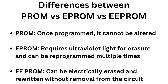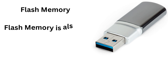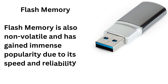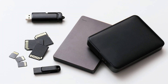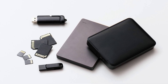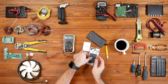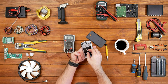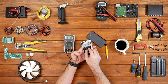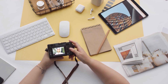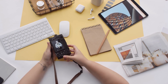Now let's talk about flash memory. This type of memory is also non-volatile and has gained immense popularity due to its speed and reliability. It's commonly used in USB drives, SSDs (solid-state drives), and memory cards. Flash memory allows for faster data access compared to traditional hard drives and is more durable since it has no moving parts. It's essential for portable devices and is often used in smartphones and tablets. Flash memory can endure about 10,000 write cycles, making it a robust option for both consumer and industrial applications.